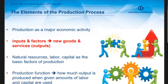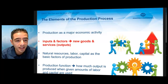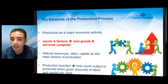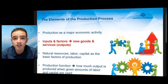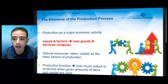First of all, I would like to start with the elements of the production process. As it's a well-known fact, production is the main and basic economic activity, defined as the process which converts resources — called inputs or factors of production — into new goods and services called outputs, over a period of time.